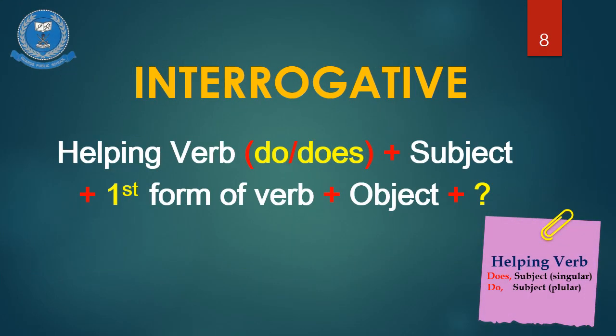Interrogative: To begin the sentence, we require the helping verb first. For this, you have to consider the subject first. If your subject is singular, you will use 'does'. If it's plural, you will use 'do'. After considering the subject and using the helping verb, you will add the first form of verb along with the object. Since the sentence is in question or interrogative form, you must end it with a question mark.